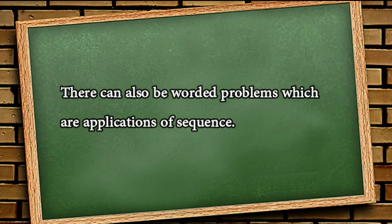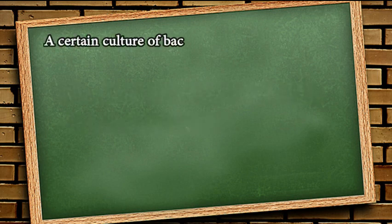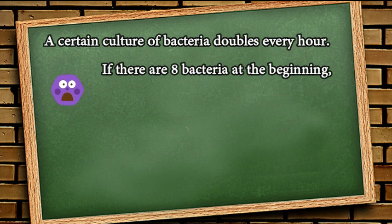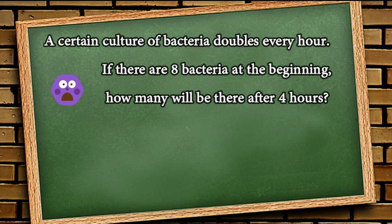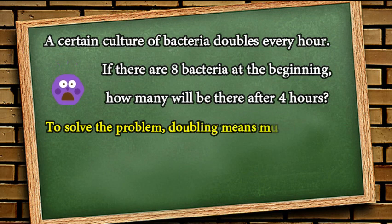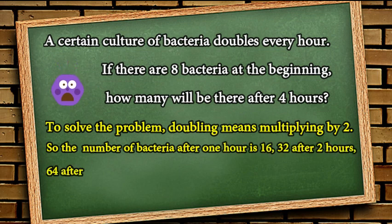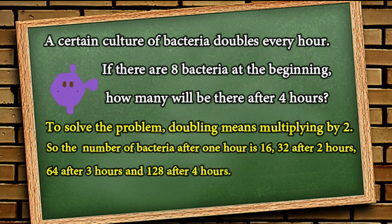You may also encounter worded problems which are applications of sequence. Example: A certain culture of bacteria doubles every hour. If there are 8 bacteria at the beginning, how many will be there after 4 hours? To solve the problem, doubling means multiplying by 2. So the number of bacteria after 1 hour is 16, 32 after 2 hours, 64 after 3 hours. And finally, 128 after 4 hours.